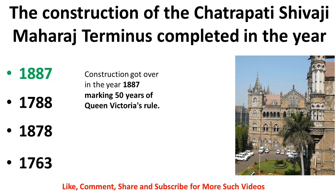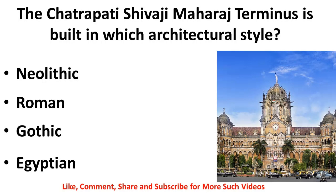The construction was completed in 1887, marking 50 years of Queen Victoria's rule, which is why the terminus was earlier named Victoria Terminus. In 1887, 50 years of Queen Victoria's rule were completed, and to mark that, Victoria Terminus was constructed. The Chhatrapati Shivaji Maharaj Terminus is built in which architectural style — Neolithic, Roman, Gothic, or Egyptian? The correct answer is Gothic architecture — specifically Italian Gothic architecture.